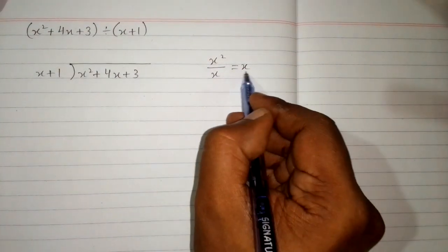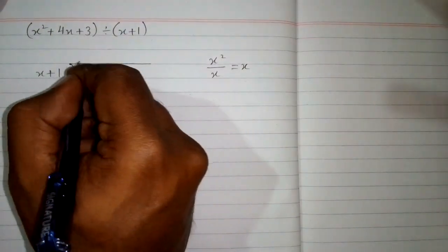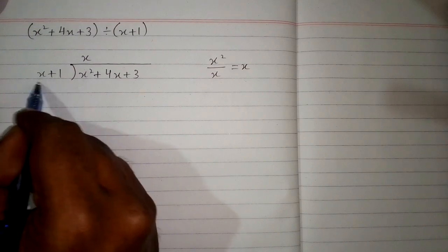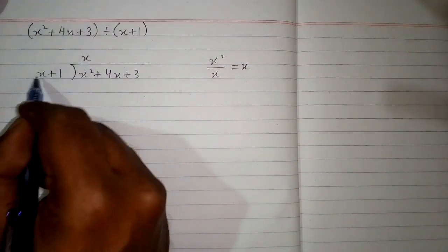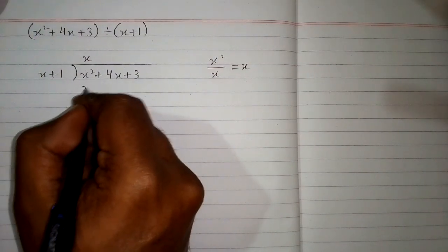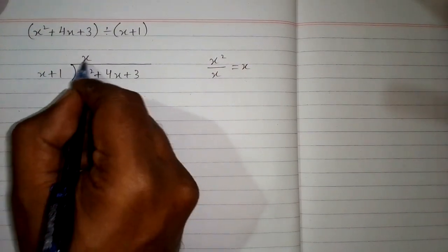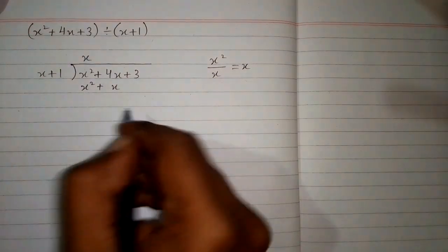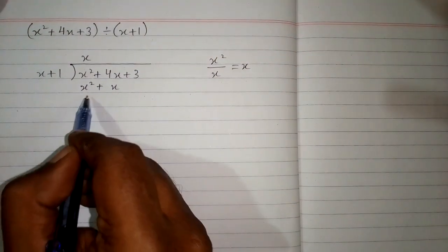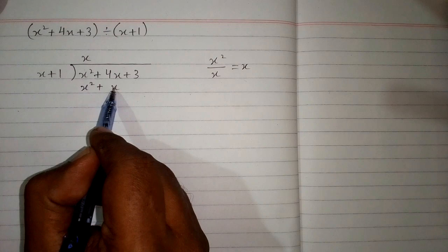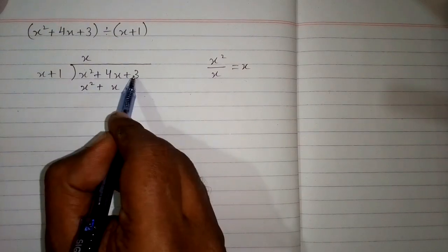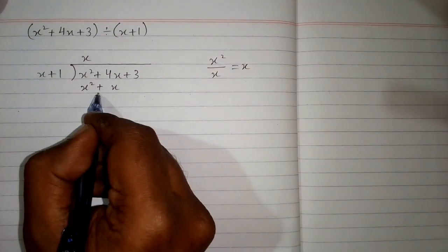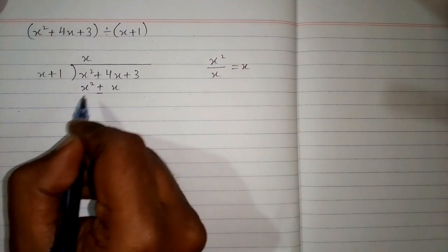Now we will write this x in the quotient and multiply the divisor by x. So x times x is x squared, and x times 1 is x.